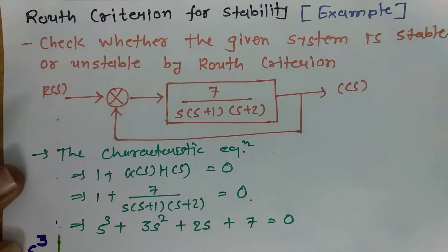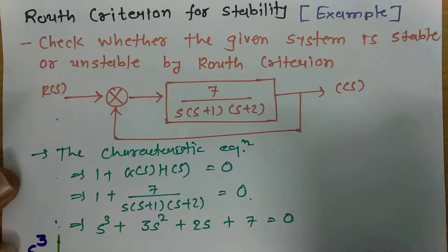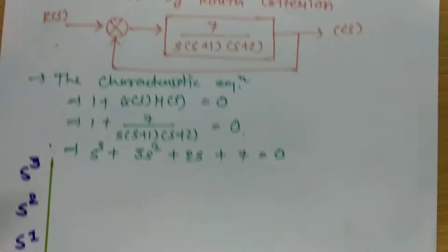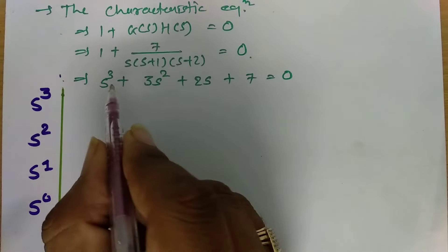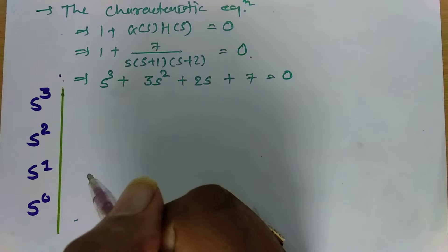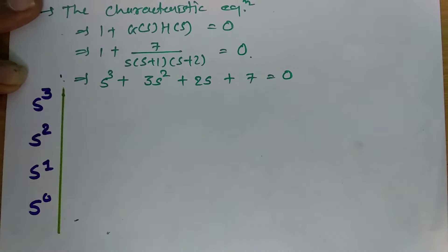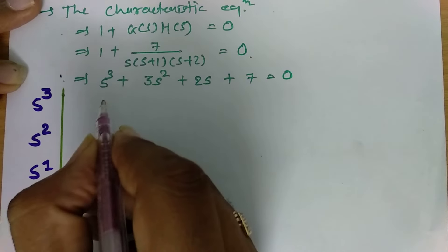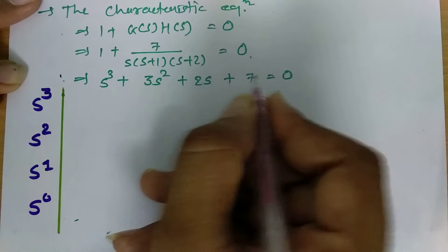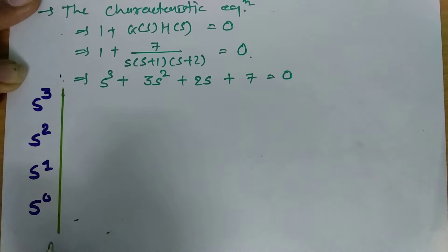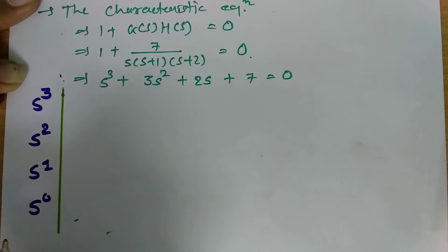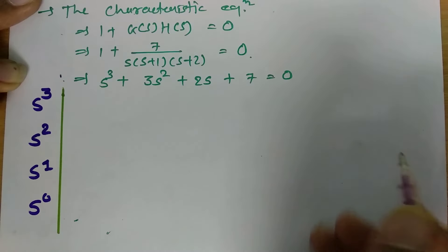This characteristic equation equals zero, and we utilize it to calculate Routh criteria for stability. We will make a Routh matrix by placing coefficients in the matrix. The order of the characteristic equation is s³, so we write the Routh matrix rows as s³, s², s¹, and s⁰, and then find the unknown coefficients.